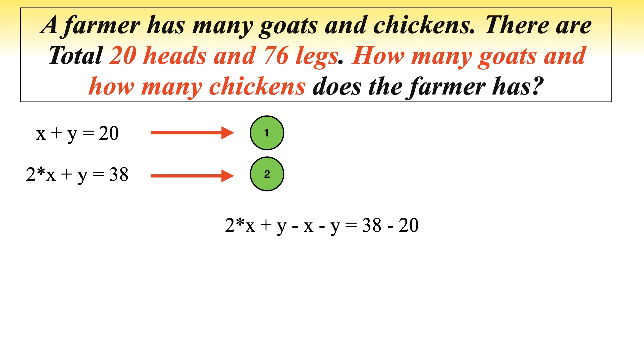Subtract equation 1 from equation 2. This will result in 2x plus y minus x minus y equals 38 minus 20.